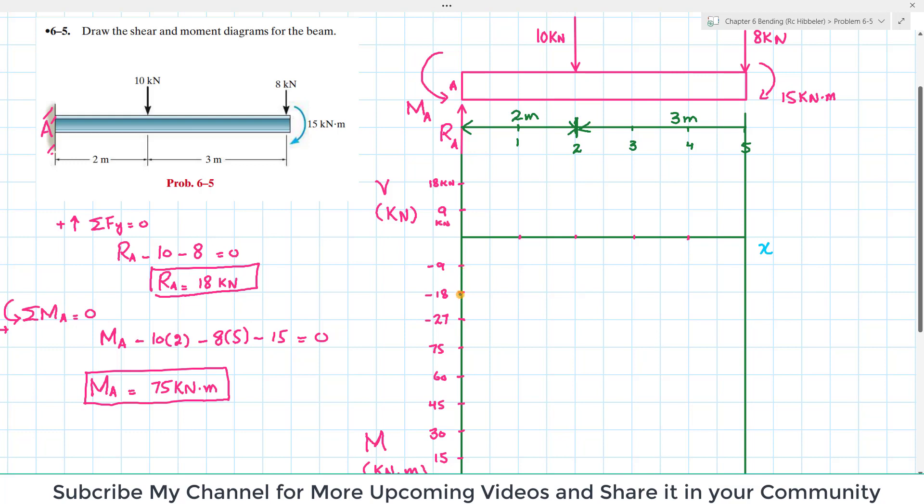At point A there is only shear force RA which is 18 kN. I'll start from this point. Moving from A to this point, there is no other shear force, so this will be a horizontal line.